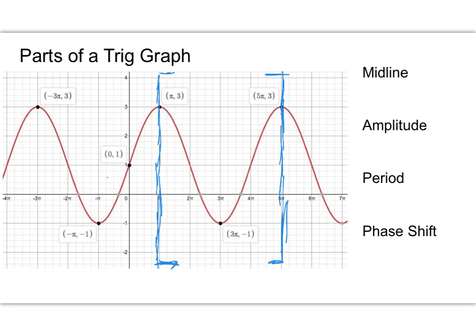The midline is the horizontal middle of the graph. We tend to use the letter d to represent this. I'm going to look between the top of this graph and the bottom of the graph. So I've got 3 and negative 1. The midline is going to be right in the middle of those points. If I draw a horizontal line at positive 1, we can see this cuts this graph right down the middle.